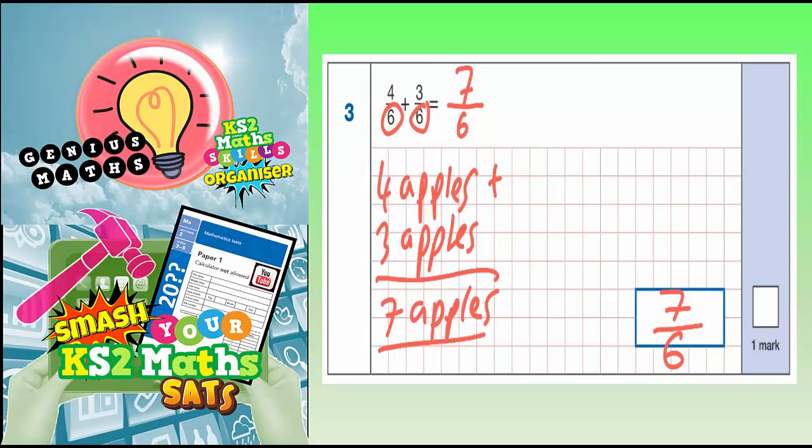Now you could, if you wanted to be really clever, turn that improper fraction—because that is an improper fraction, because the top number is bigger—into a mixed number.